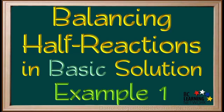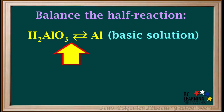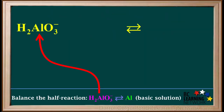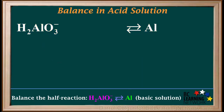Here, we'll go through an example of balancing a half reaction in basic solution. We're asked to balance the half reaction H2AlO3⁻ gives Al, taking place in basic solution. We'll start by adding H2AlO3⁻ to the left side and Al to the right side. Even when balancing a half reaction in basic solution, we still start with the steps for acid solution.